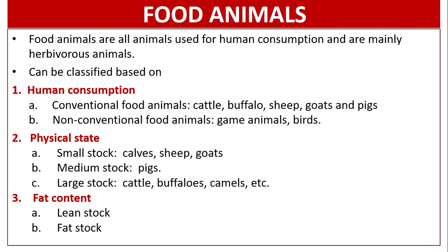Food animals are all animals used for human consumption and are mainly herbivorous animals. They can be classified based on human consumption, physical state, and fat content. The first category is human consumption: conventional food animals like cattle, buffalo, sheep, goats, and pigs.